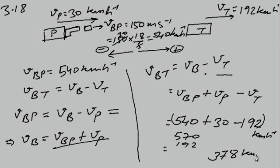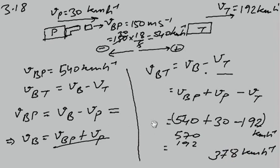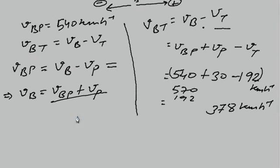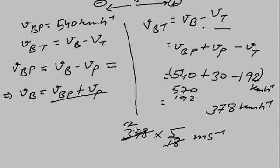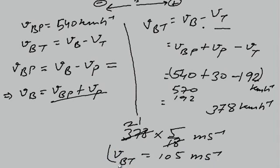The answer is 378 km per hour. Converting into m/s by multiplying 378 by 5/18, we get 105 m/s. This is the velocity with which the bullet strikes the thief's car — the velocity of the bullet with respect to the thief's car.